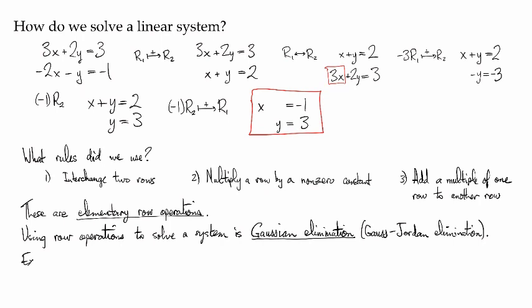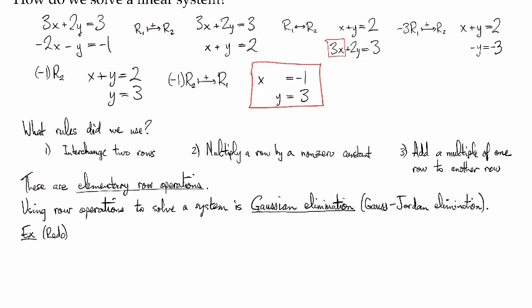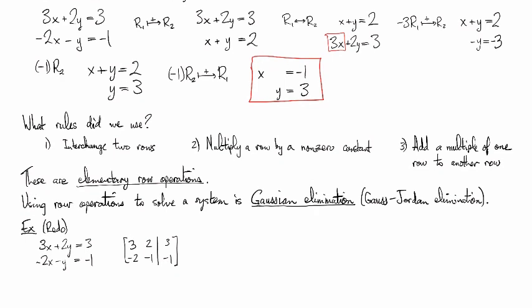So let's look at that example again. We'll do a redo of that example in matrix form. We had before 3x plus 2y equals 3, minus 2x minus y equals minus 1. So as an augmented matrix, this would be 3, 2, minus 2, minus 1, bar, 3, minus 1.